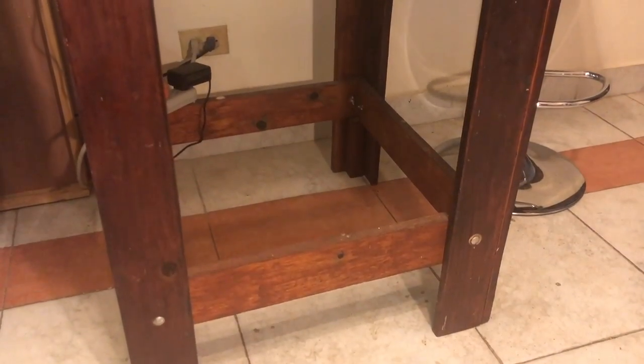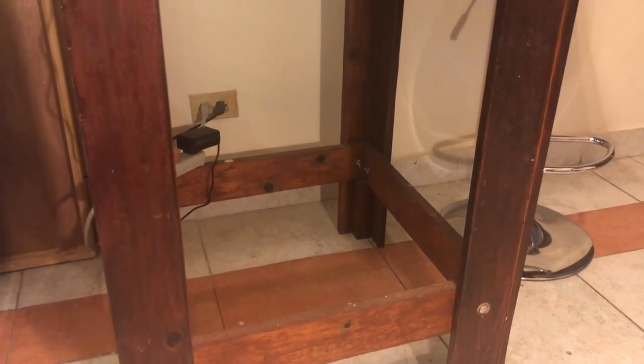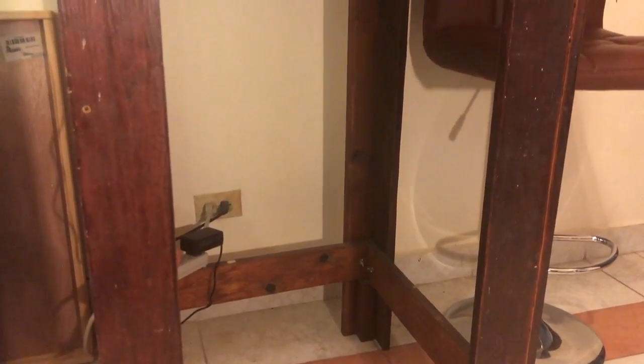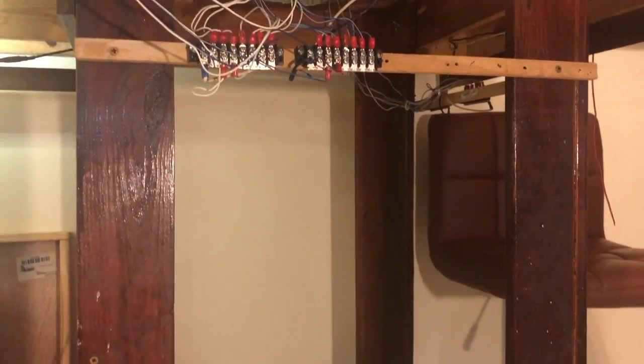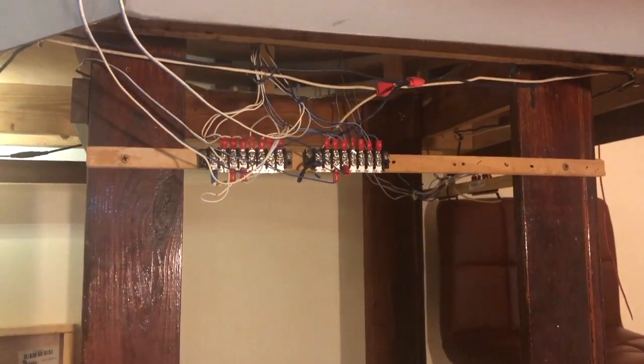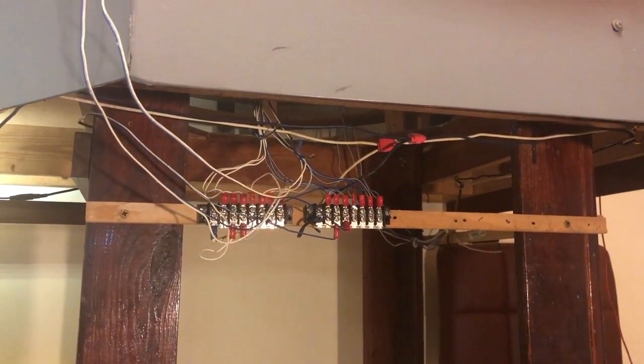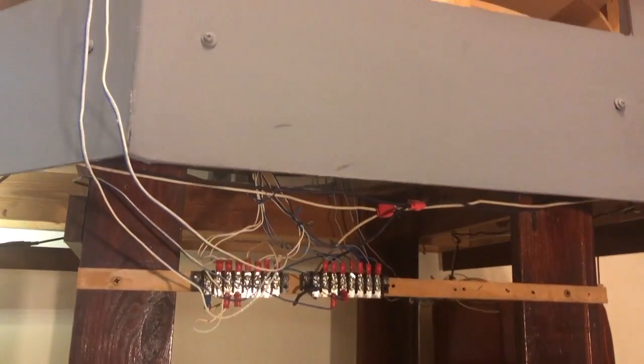This is the bench work at the east end of my layout. As you can see, I varnish most of it. I do this in part to help protect it from termites and in part because I want it to look like nice furniture. I don't plan to hide the bench work behind skirting.